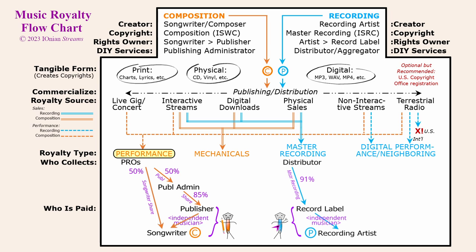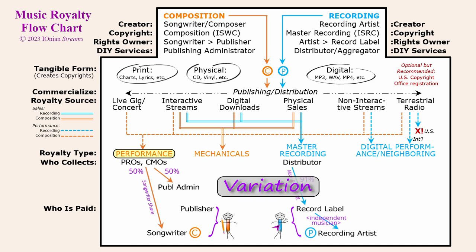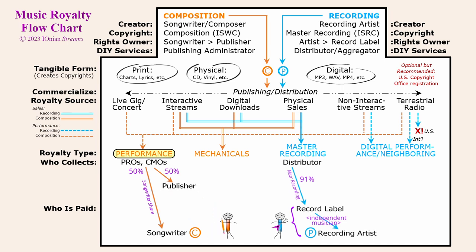A publishing administrator, for example SongTrust — which the author uses and recommends — takes 15%, but importantly will not take any of your song ownership; you still retain all your composition copyright. Performance royalties originating outside the US are collected by collective management organizations, or CMOs. Through reciprocal agreements with overseas CMOs, your PRO in the US can collect international performance royalties. Alternatively, a publishing administrator should have direct affiliations with overseas CMOs and be able to register your music directly with them, resulting in more efficient collection. If you have signed a deal with a publisher, they will take the place of the publishing administrator, acquire some of your composition copyright, and you will receive much less of the performance and mechanical royalties.